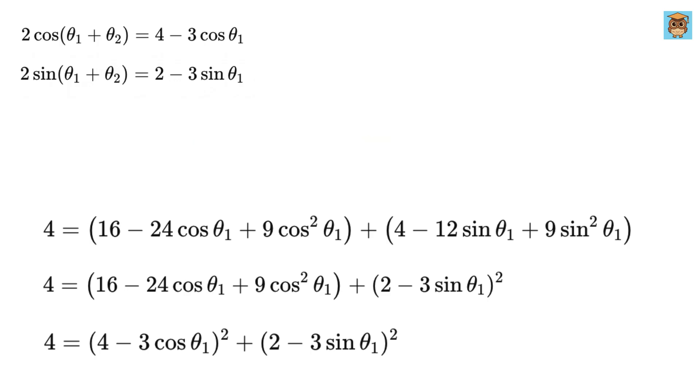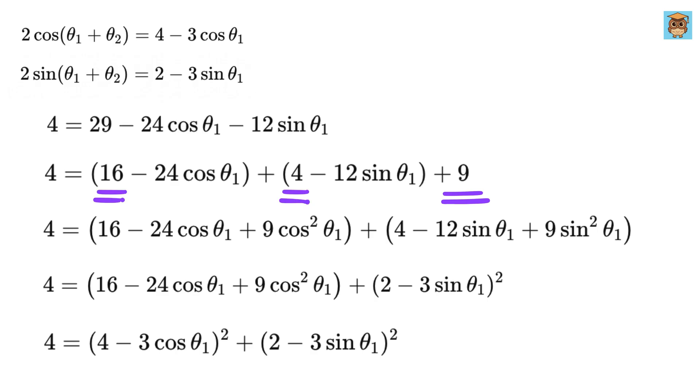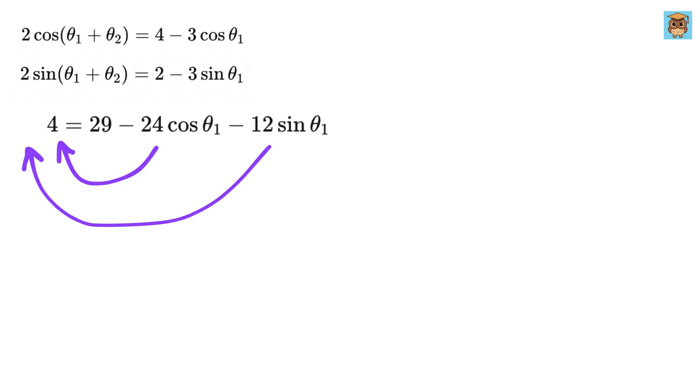Again using this identity both of them will add up to give 9. Then 9 plus this 16 and this 4 will give 29 minus 24 cos theta 1 minus 12 sine theta 1. Take both of them here and this thing here to get 24 cos theta 1 plus 12 sine theta 1 equals 25. Okay, let us solve this.